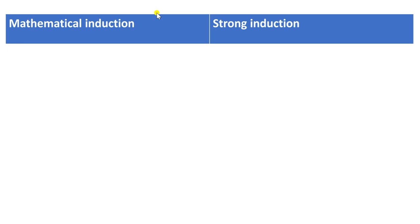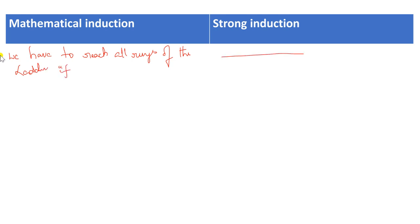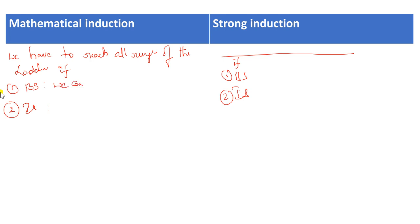Let us briefly compare Mathematical Induction and Strong Induction. In both cases, we need to reach all rungs of the ladder, and both have two steps: the Basic Step and the Inductive Step. In the Basic Step, both methods can reach the first rung only — that part is the same.